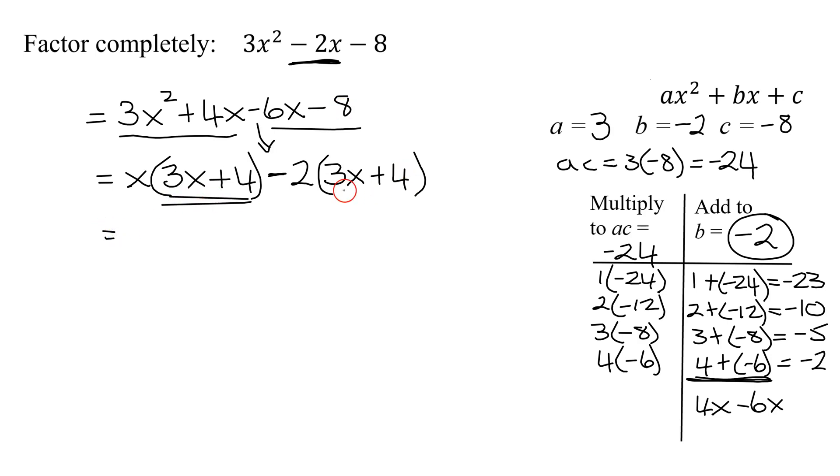this binomial is the same as this one. It's my common binomial factor. So I'm going to pull 3x + 4 in front. And what does it leave behind? In my second binomial, it leaves me with x - 2. So I've now factored my trinomial into the quantity (3x + 4) times the quantity (x - 2).